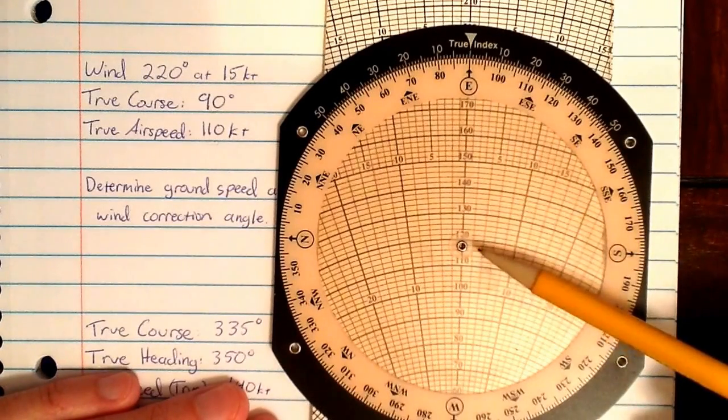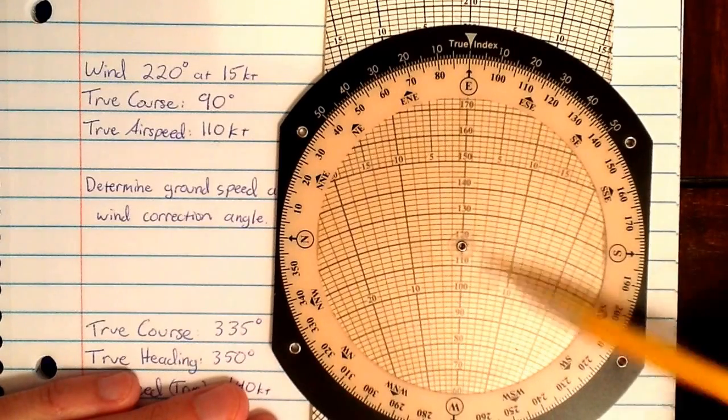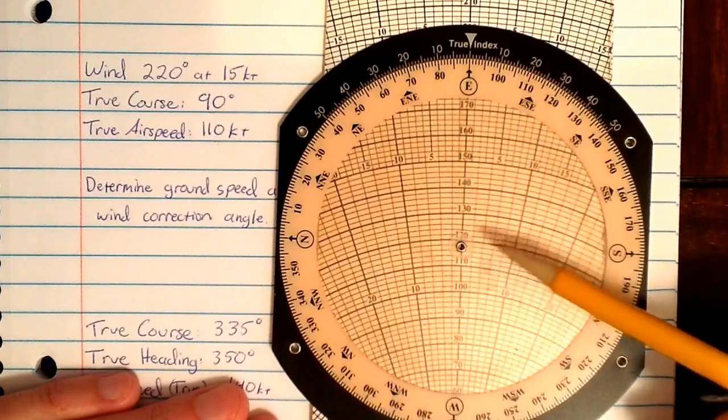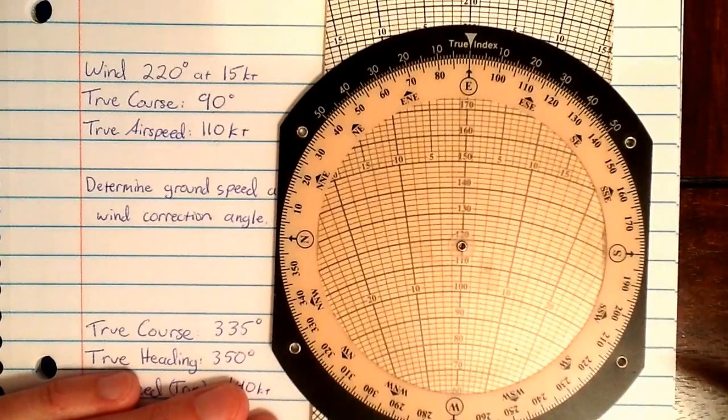It's giving us a ground speed, which can be measured by just looking right at the grommet. In this case, it's 110, 12, 14, 16, 18, 118 knots over the ground.